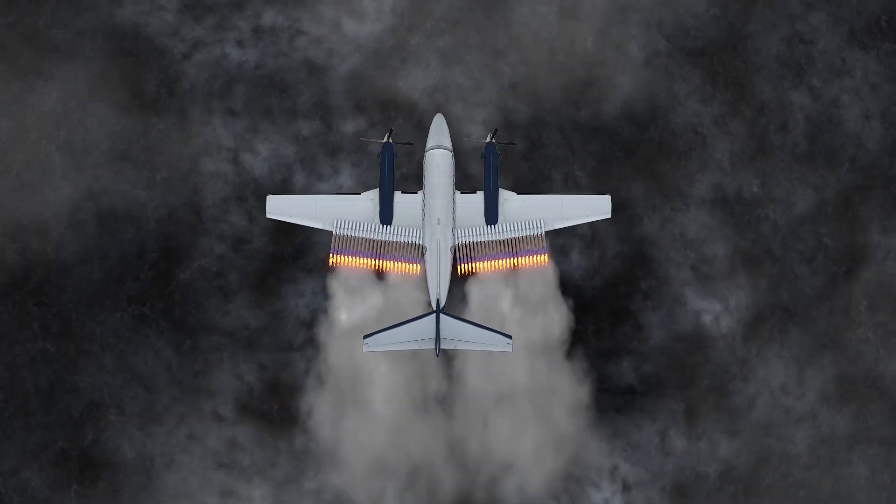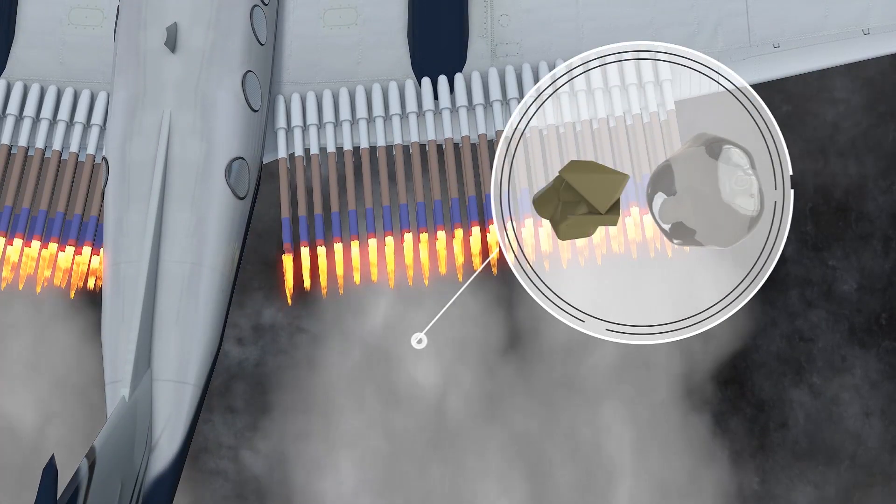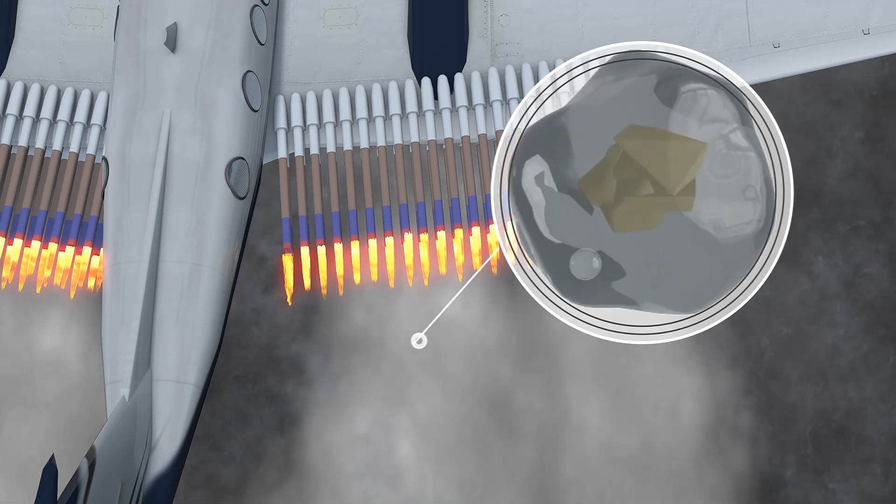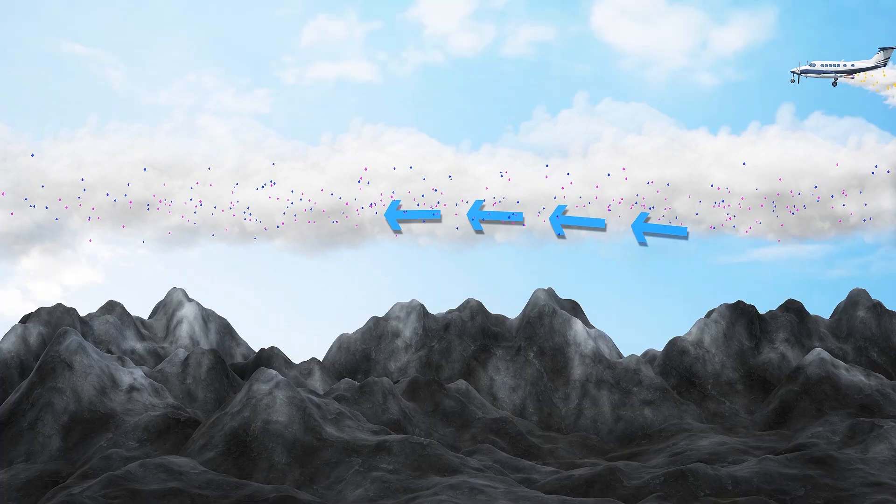The process involves inserting silver iodide crystals, which have a shape similar to ice crystals, into clouds so supercooled water droplets accumulate around them and gain enough mass to form snowflakes. Proponents say studies prove